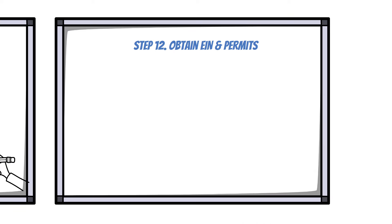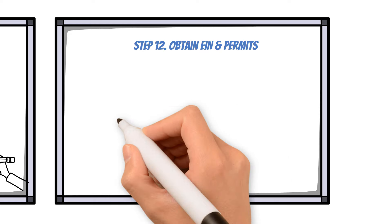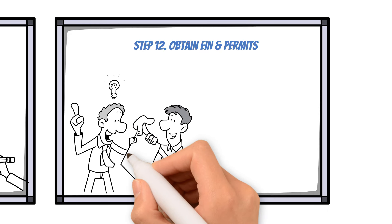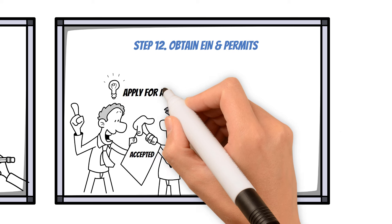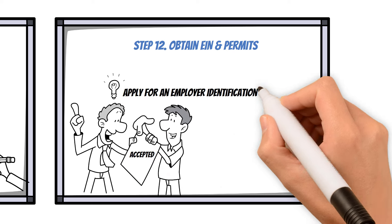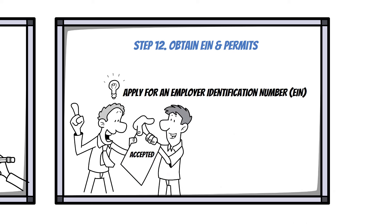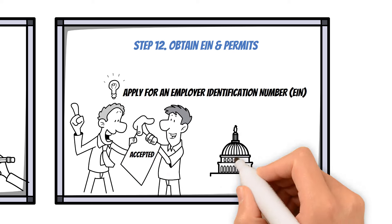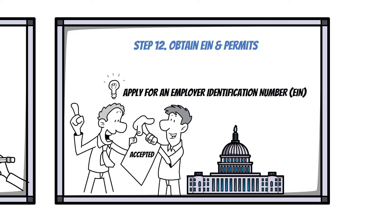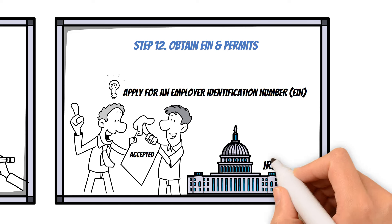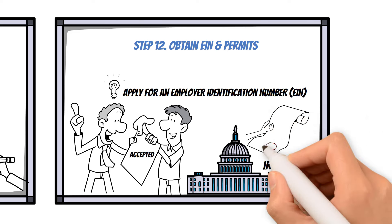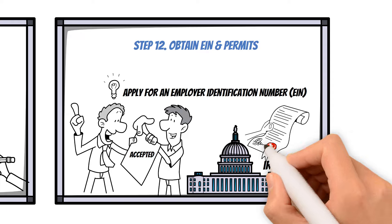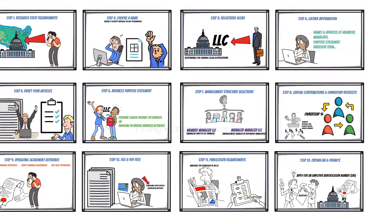Step 12: Obtain EIN and Permits. After receiving confirmation that your articles are accepted, apply for an Employer Identification Number, EIN, from the Internal Revenue Service, IRS. Additionally, acquire necessary licenses or permits based on your business activities.